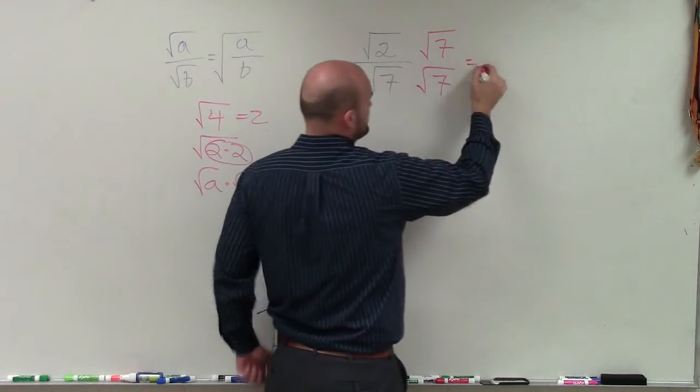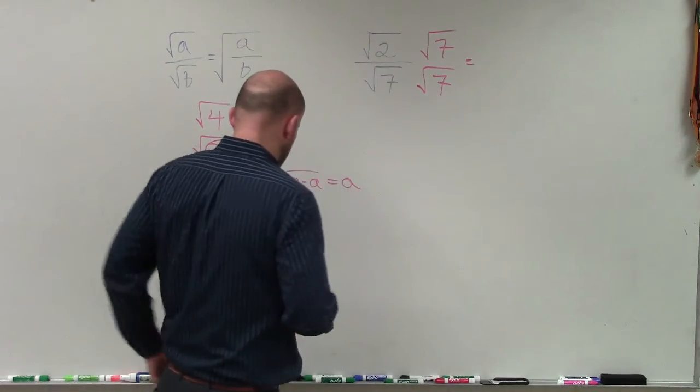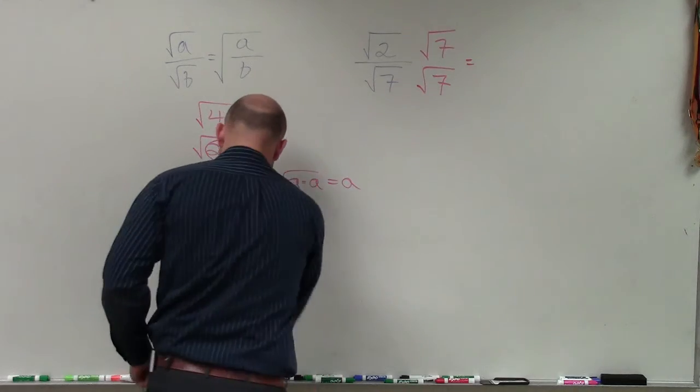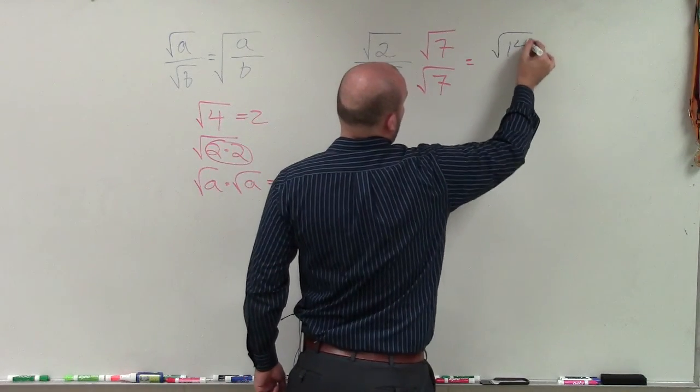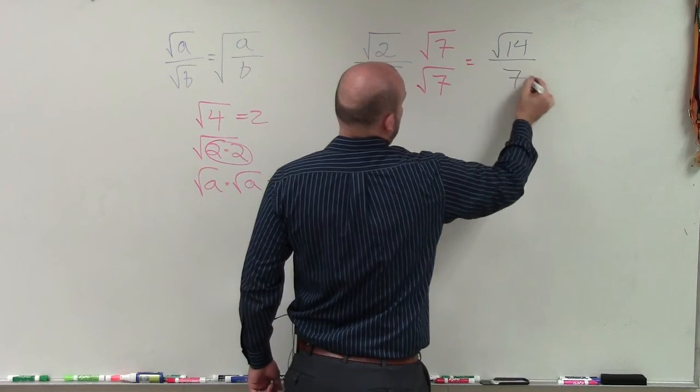Now I can multiply these, so that's going to produce the square root of 14 divided by 7.